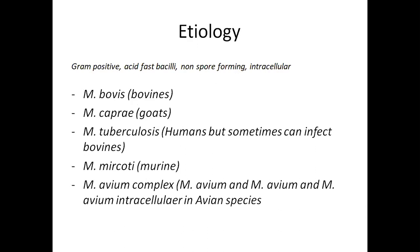TB, whether caused in humans or in animals, the Mycobacterium is basically gram-positive, acid-fast bacilli, which is non-spore-forming bacteria and it is able to replicate inside cells. So it is intracellular in nature. There are different species of Mycobacterium that cause TB in different animals and humans.